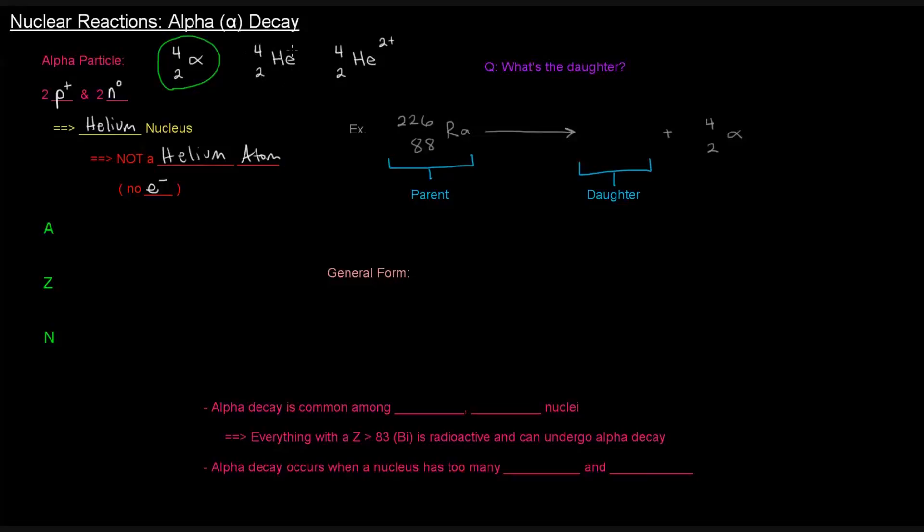The plus charge really is not really mentioned much in nuclear reactions because the implication is that charges due to the electrons are not really written up here. It's implied with nuclear reactions that you're talking about the nucleus, so outside electrons are not really considered here.